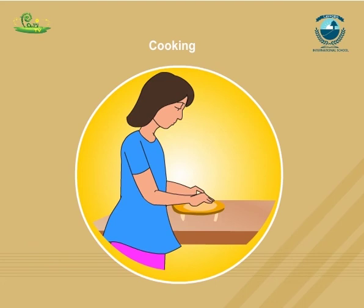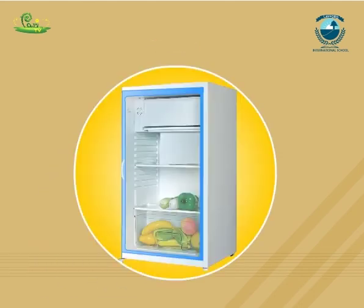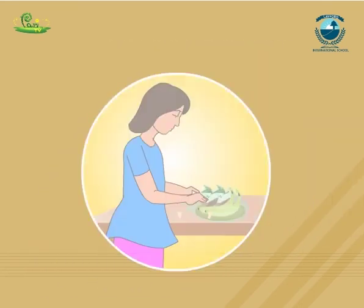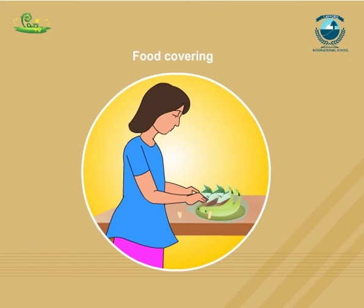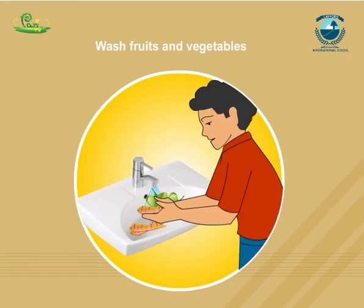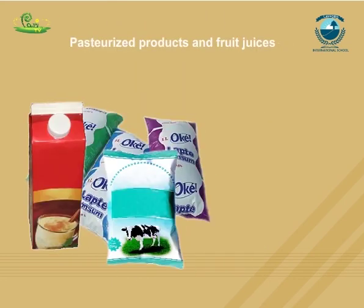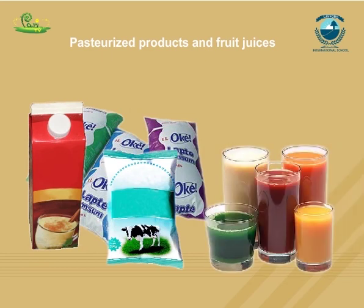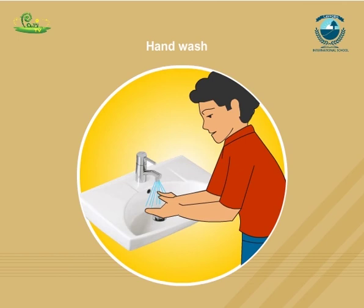Steps to prevent food poisoning: number one, cook food properly; number two, refrigerate leftovers promptly; number three, do not use contaminated food; number four, wash fruits and vegetables before using; number five, purchase pasteurized dairy products and fruit juices — pasteurized foods are heated to a temperature hot enough to kill bacteria that cause food poisoning; number six, wash hands well before food preparation; number seven, sanitize food preparation surfaces regularly.